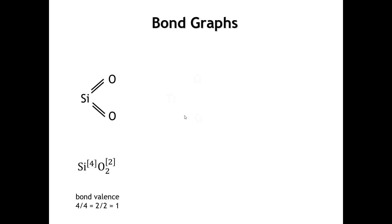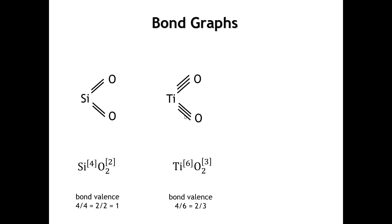What about TiO₂, the compound that forms between titanium and oxygen? Titanium is larger than silicon, and the dominant coordination number for titanium is 6 — an octahedron. So we draw 3 lines from the titanium to each oxygen: 6 lines emanate from titanium making it 6-coordinate, and each oxygen has 3 lines coming to it, making each oxygen 3-coordinate. If we calculate the strength of each bond in TiO₂, we get a valence of two-thirds.